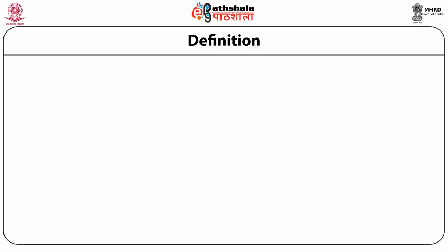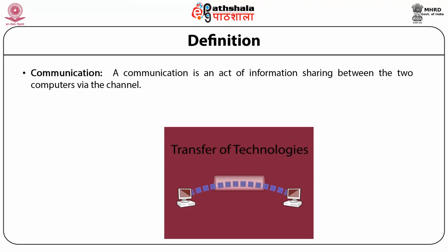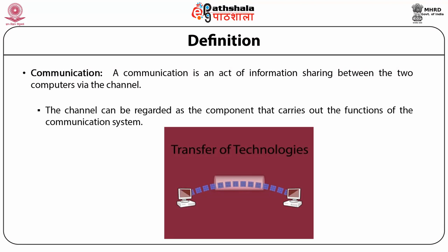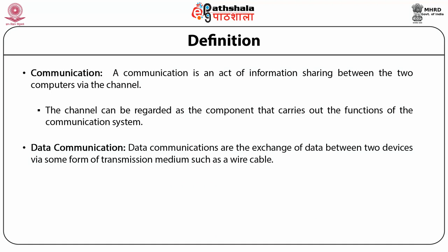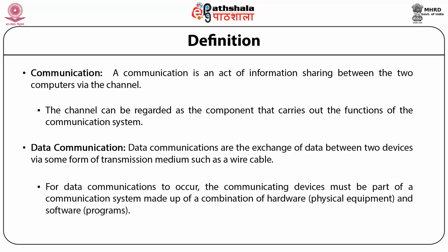Communication is an act of information sharing between two computers via a channel. A channel carries out the function of the computer system. Data communication is the exchange of data between two devices via some form of transmission media such as wire cable. For data communication to occur, communication devices must be part of a system made up of a combination of hardware — physical equipment — and software programs.